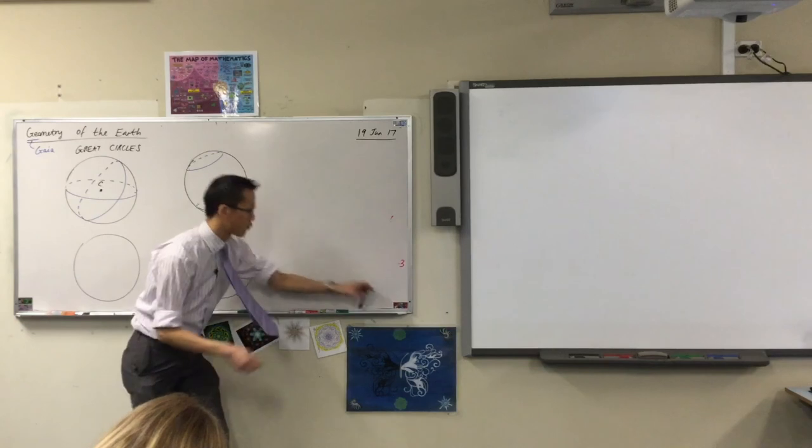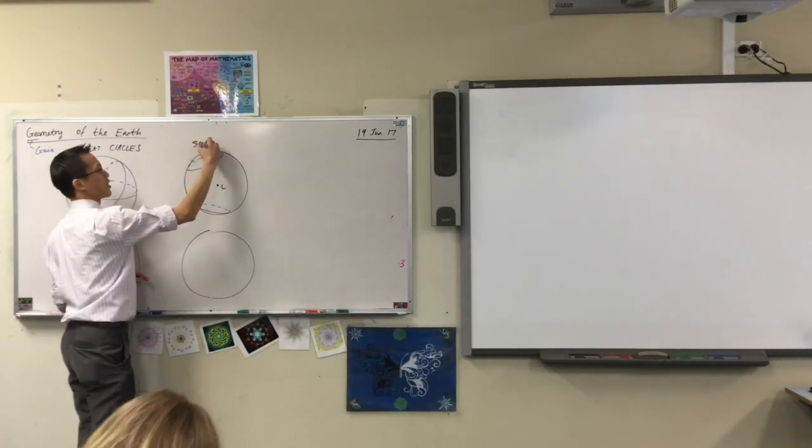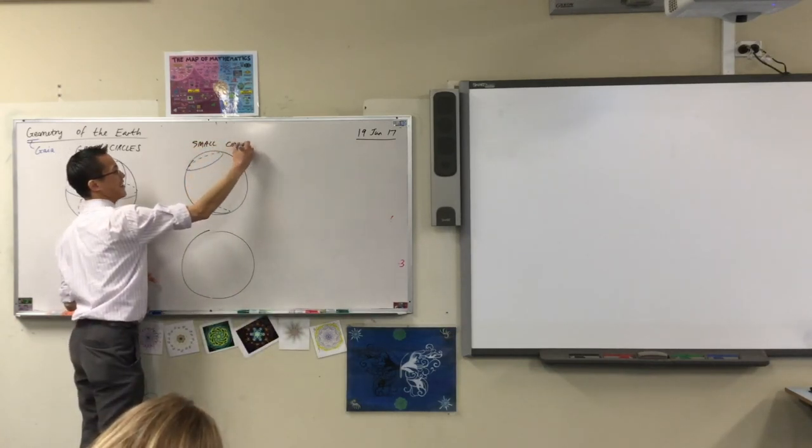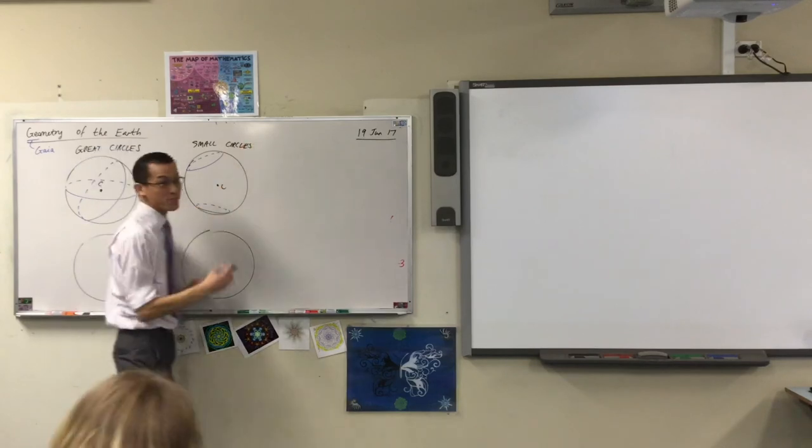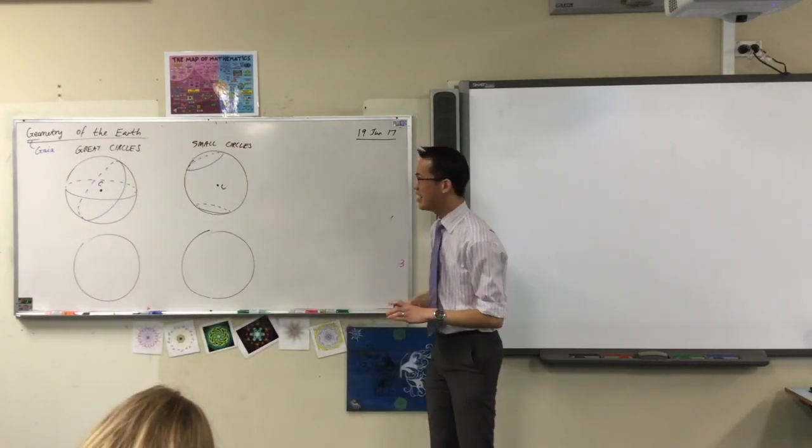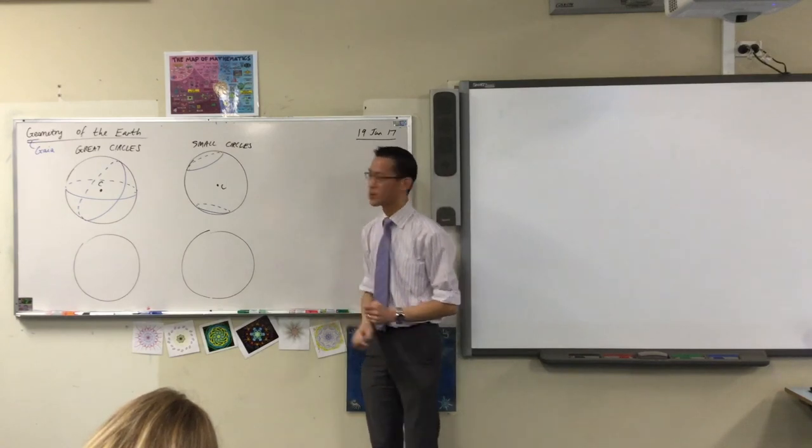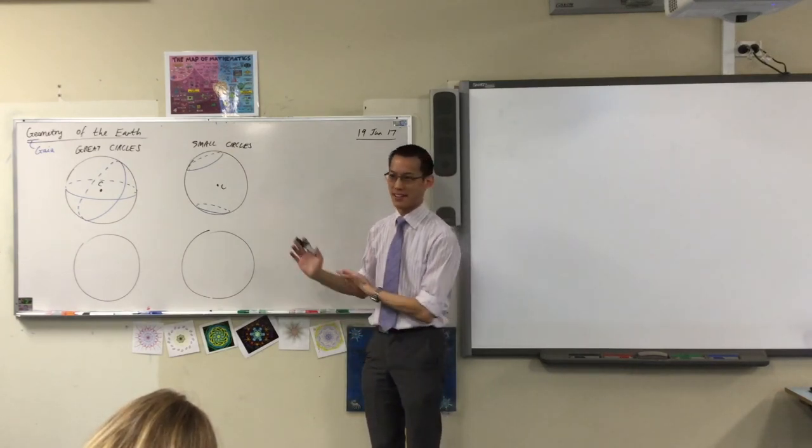These guys here are not great circles. We call them, very original descriptive name, small circles. Because they're smaller than the great circles. So great circles, small circles, it just depends on where you cut the sphere.